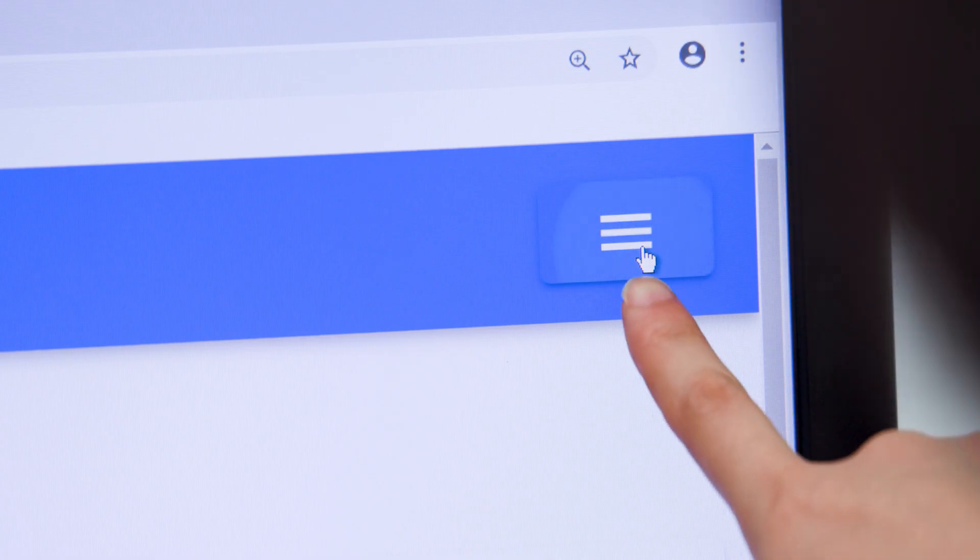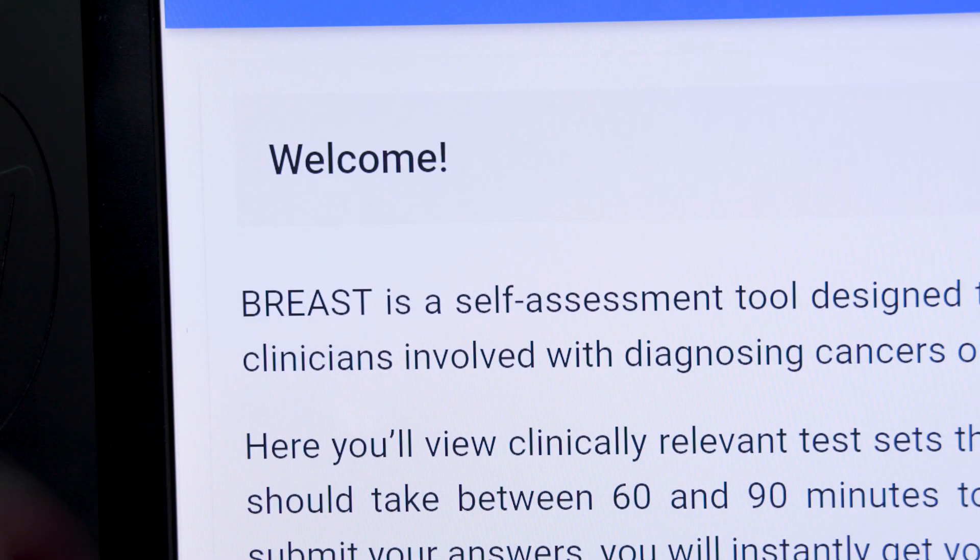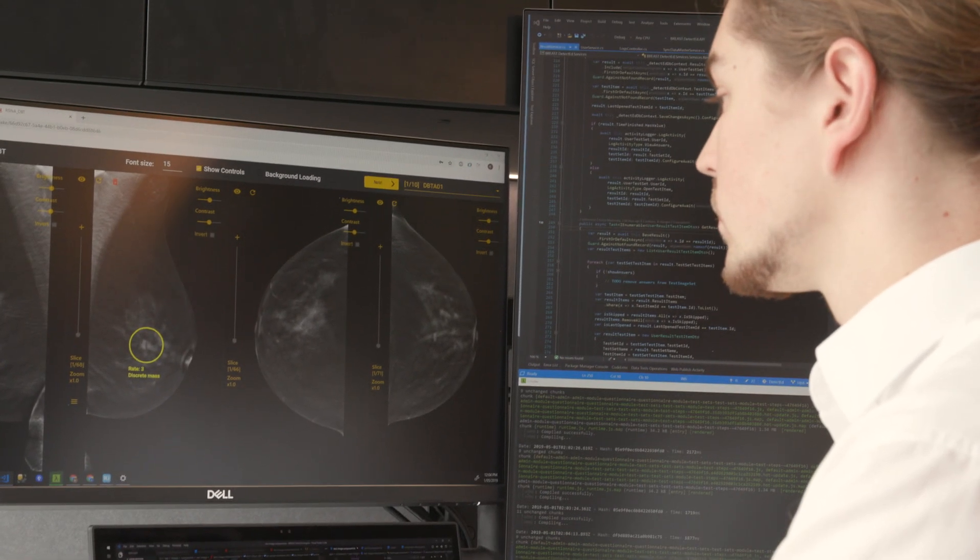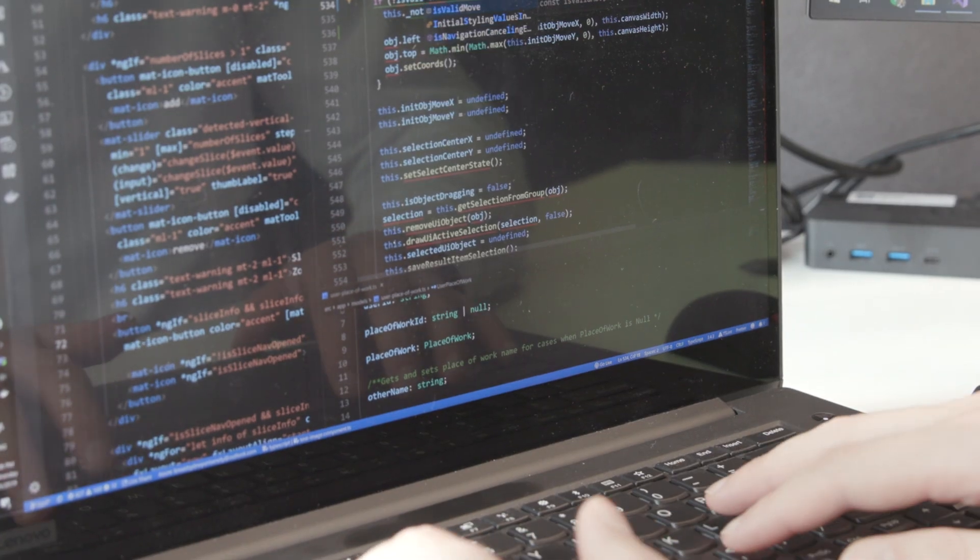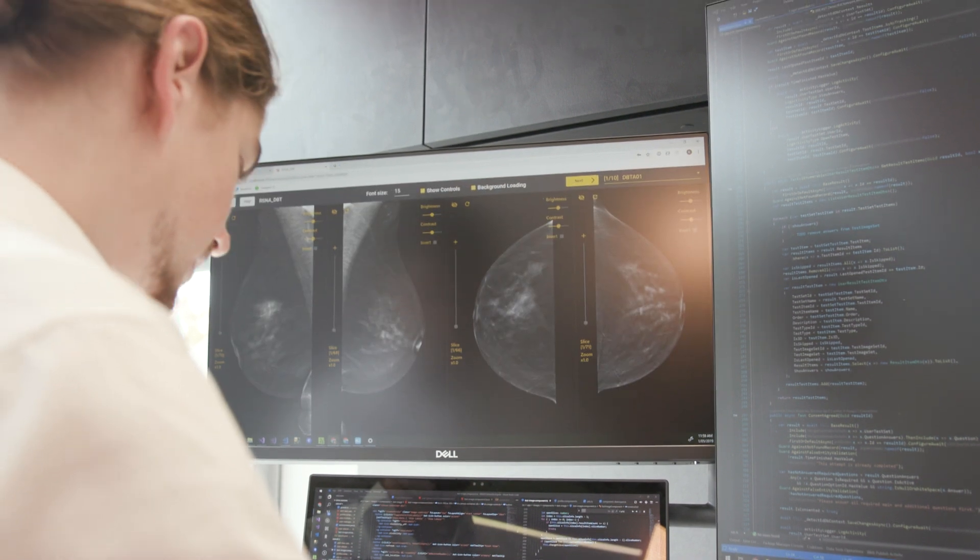We needed a new version of the app that could provide three things. It could manage the process from registration all the way to reporting. We needed an offline version and the ability to display 3D images. At SSW we use .NET Core for back-end and for front-end I use Angular and the whole application is hosted in Azure.